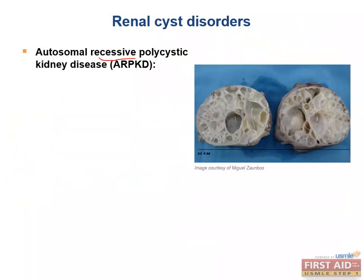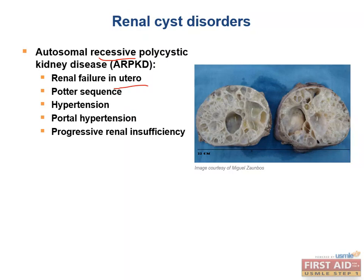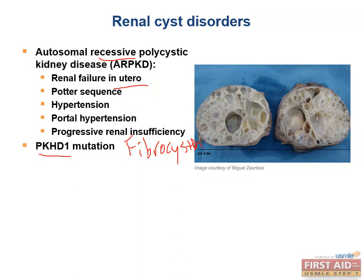In the autosomal recessive form, patients are usually fetuses or newborns. Renal failure in utero can lead to Potter sequence. Concerns after birth include hypertension, portal hypertension, and progressive renal insufficiency. It's also associated with hepatic fibrosis. The mutated protein is fibrocystin, which is involved in tubulogenesis and epithelial architecture; mutating it leads to disorganized cyst formation. It is coded by the gene PKHD1.